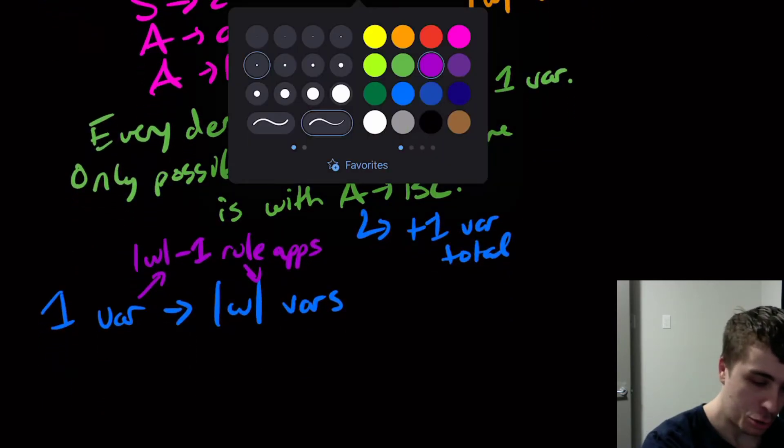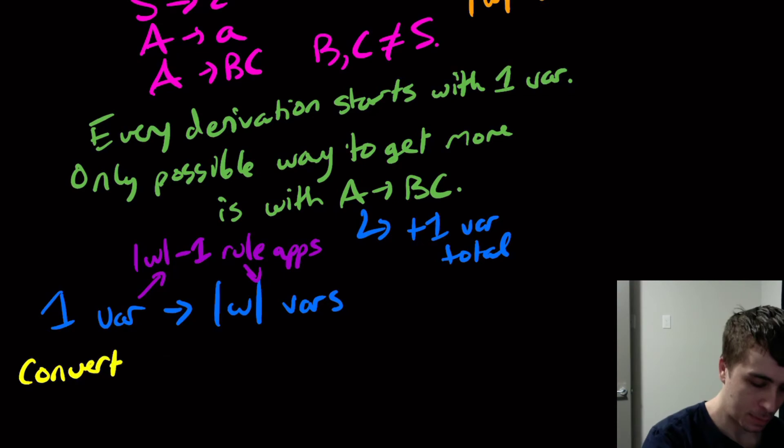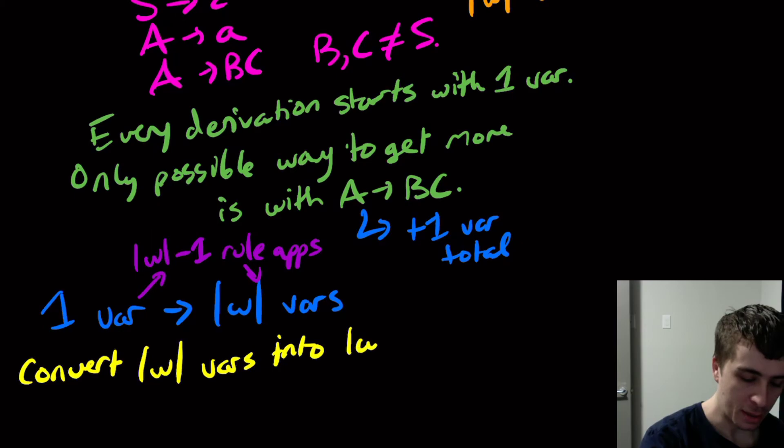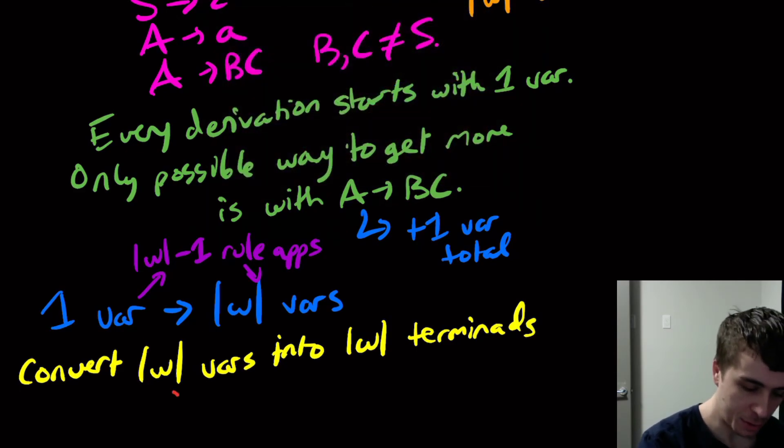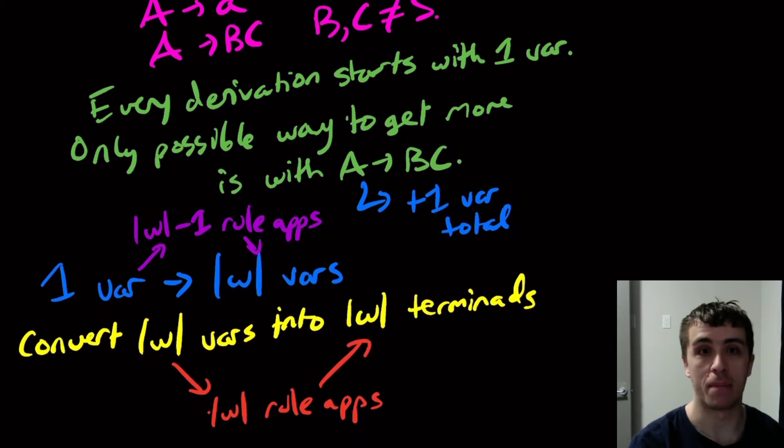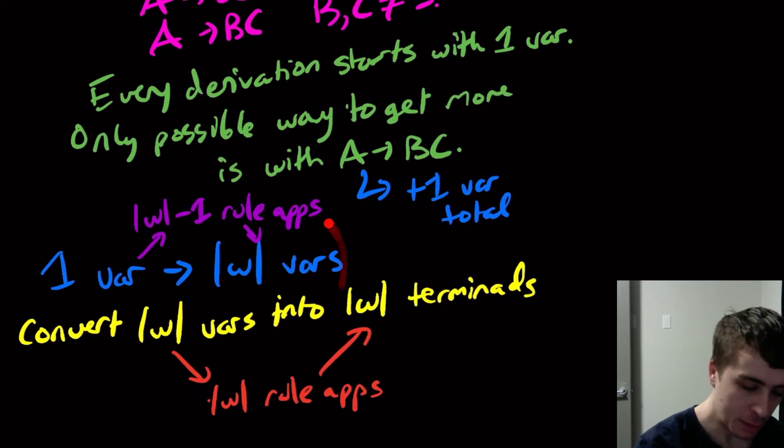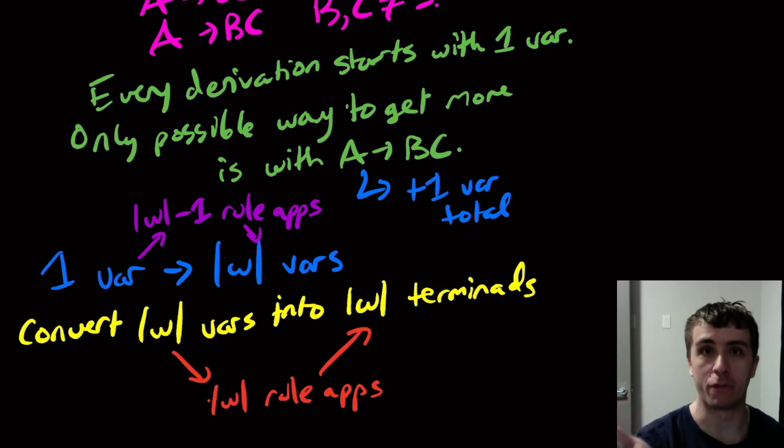And to convert the w variables into the length of w terminals, because I can only replace one of them at a time, this will take, so this process will take the length of w rule applications. Because I can only replace one of them at a time. And so in totality, we will get the length of w times 2 minus 1, because these are completely separate from each other.